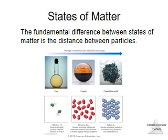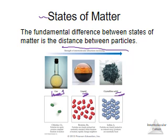Starting on chapter 11 — there are states of matter, and the biggest difference between them is the distance between the particles. We focus on three: solids, liquids, and gases. Solids are the most tightly packed, liquids are a little further apart and able to move about, and gases have the most distance between particles and are the most easily compressible.